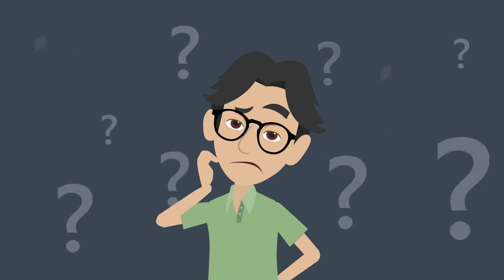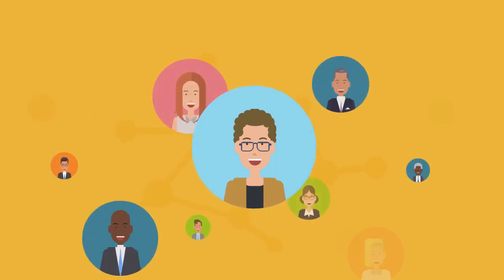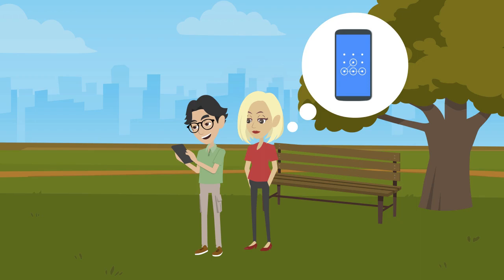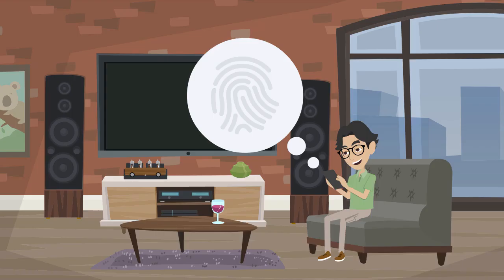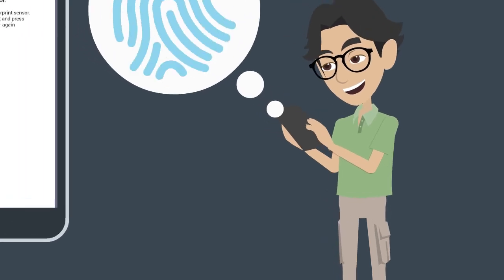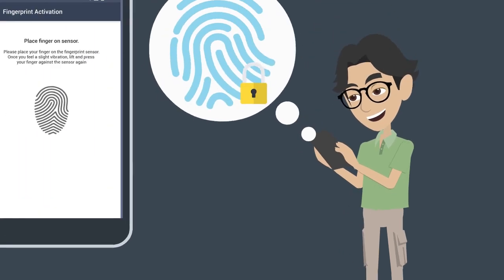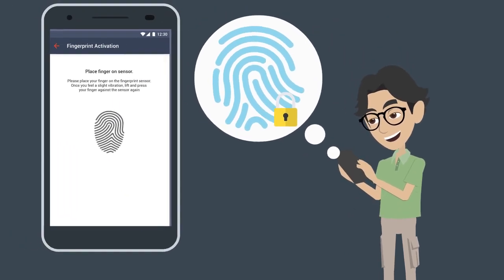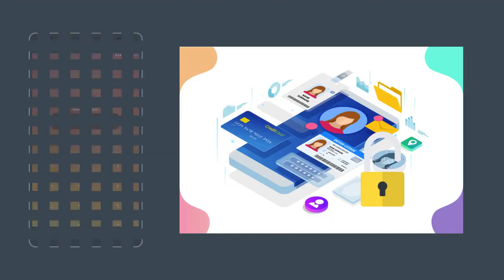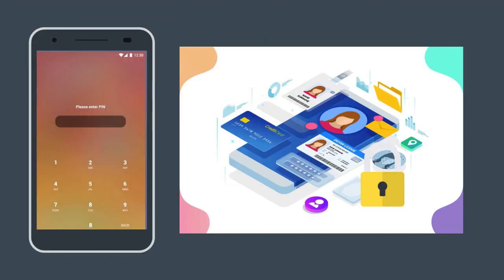Do you wish you had a way to prevent friends, family, and nosy significant others from snooping around in your phone? Fortunately, there's a way to do just that. Introducing the Dummy Mode app — created as a way for users to put their phone in privacy mode to prevent people from accessing private information.